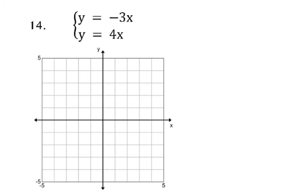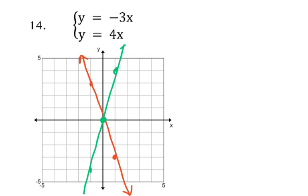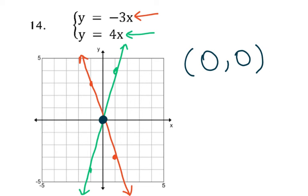Number 14: pause the video and try this one. The first equation has a y-intercept of 0 and a slope of negative 3, so go down 3 and over 1. The second equation is y equals 4x, so y-intercept is 0 and slope is positive 4. Everything in red is a solution for the first equation; everything in green is a solution for the second. Where is it red and green at the same time? They coincide at the ordered pair (0, 0). You can verify: 0 equals negative 3 times 0 — yes. 0 equals 4 times 0 — yes.